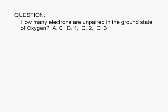How many electrons are unpaired in the ground state of oxygen? A. 0, B. 1, C. 2, or D. 3.